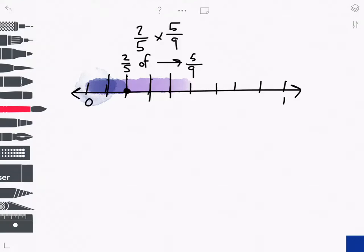To name that point on the number line, I have to think about how many segments are in my unit from 0 to 1. That's still 9. And how many have I counted here? It's 2.